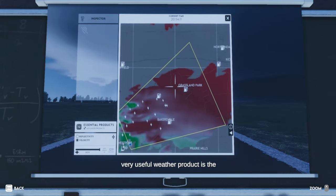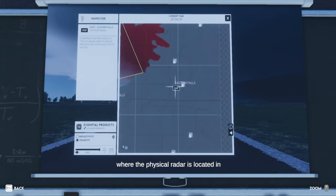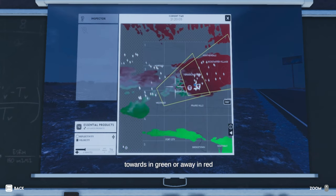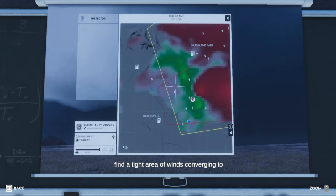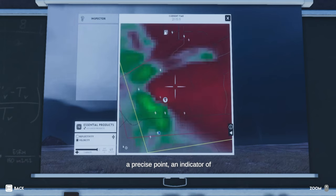The second very useful weather product is the velocity radar. On this map, you can see where the physical radar is located in the world and whether the wind is moving towards, in green, or away, in red, from the radar. Basically, you want to find a tight area of winds converging to a precise point, an indicator of rotation.